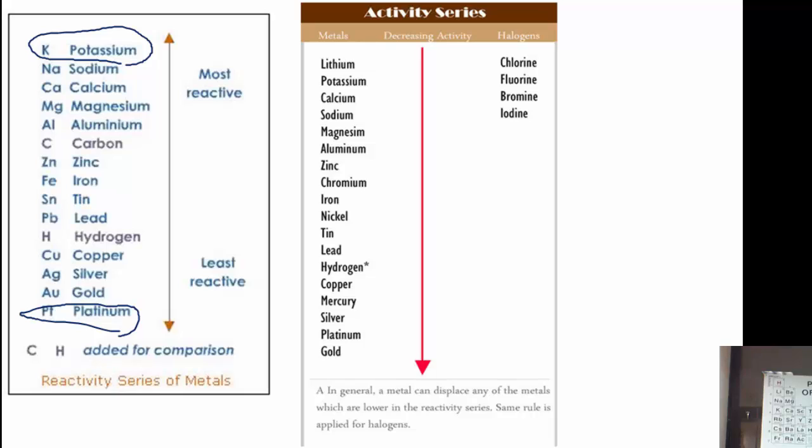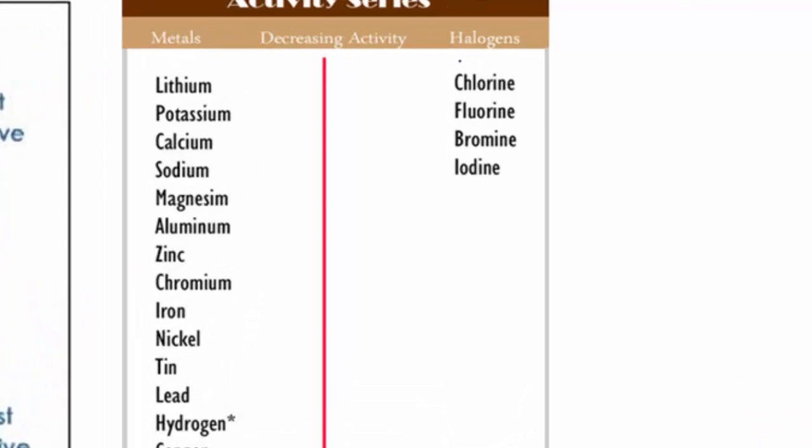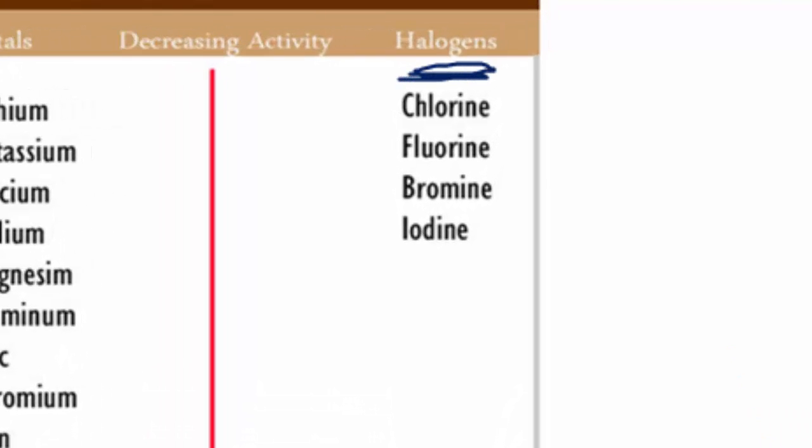Now also next to that, remember we said that metals displace metals, but non-metals can also displace non-metals. Specifically, when we talk about that, we're going to be referring to halogens. Halogens can displace halogens. And the group of halogens we're going to be looking at are these right here. The most active halogen is chlorine.